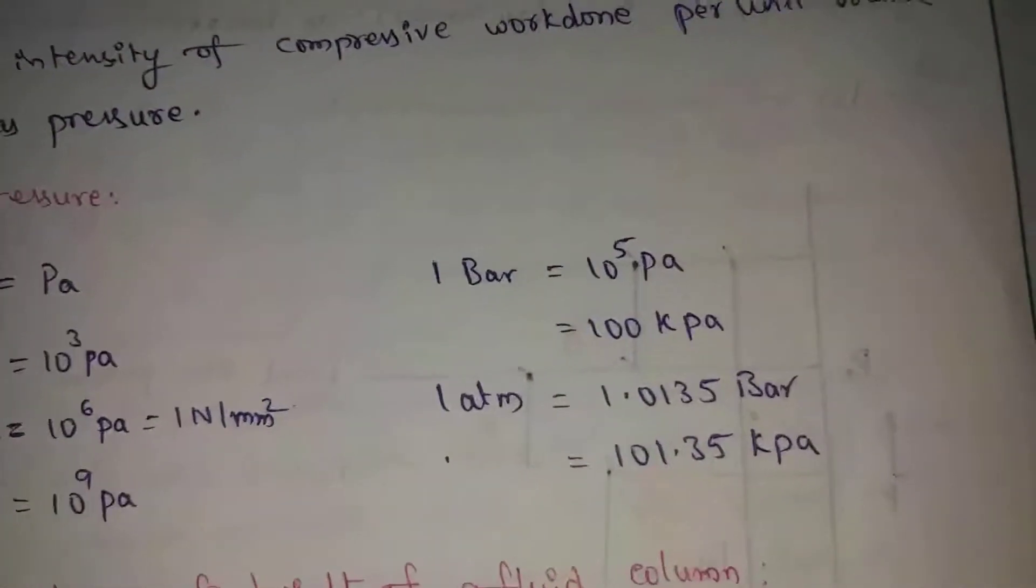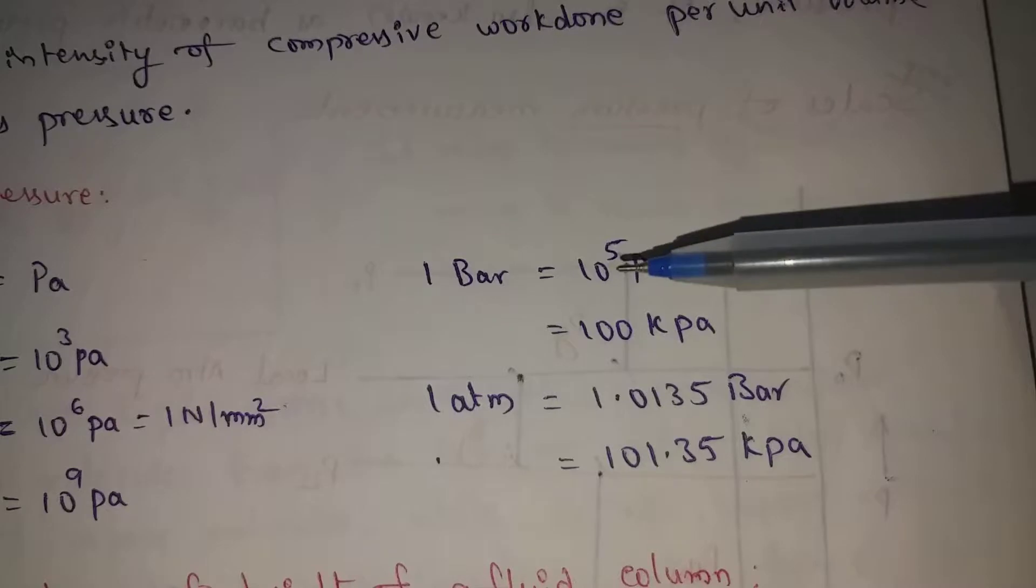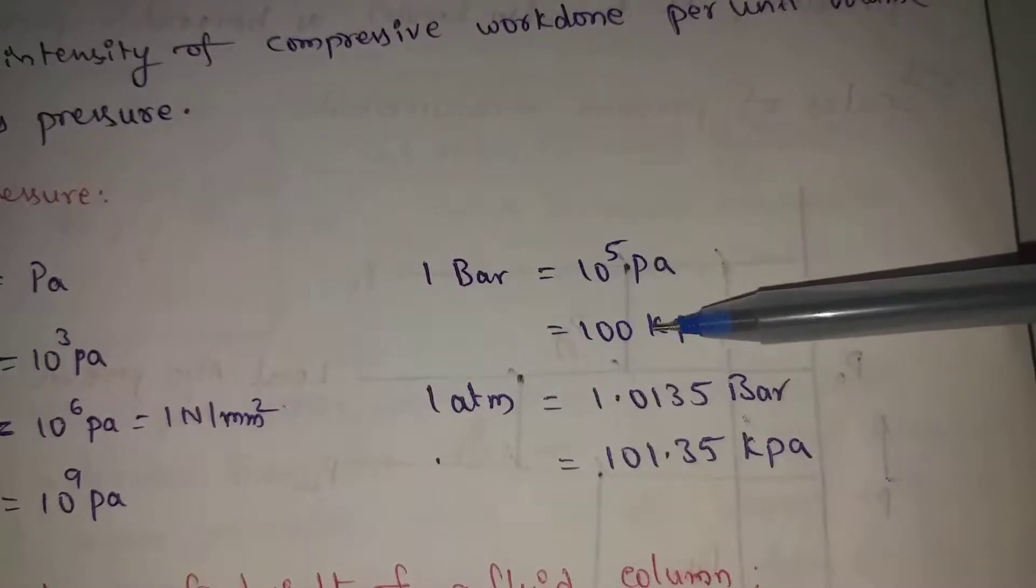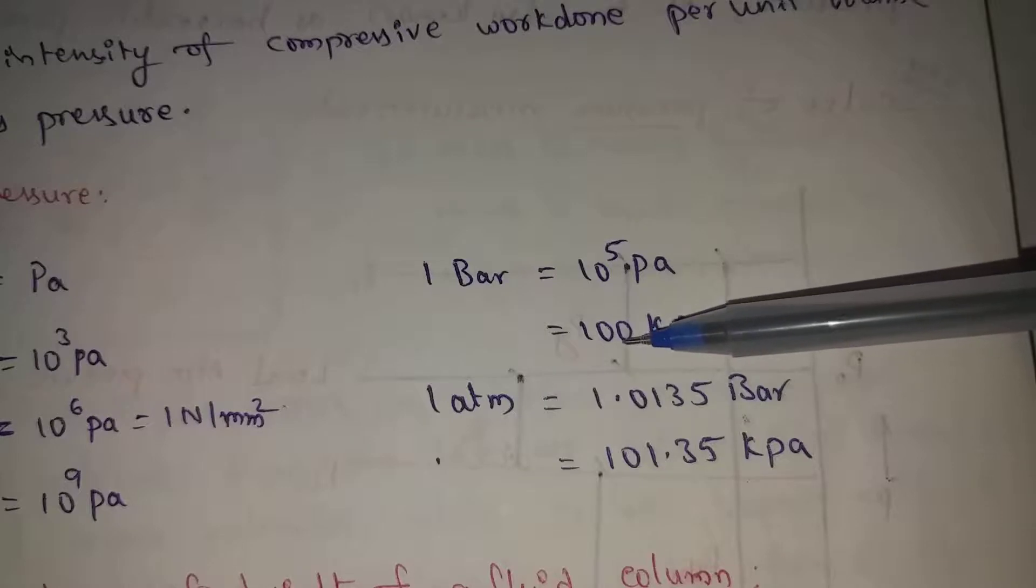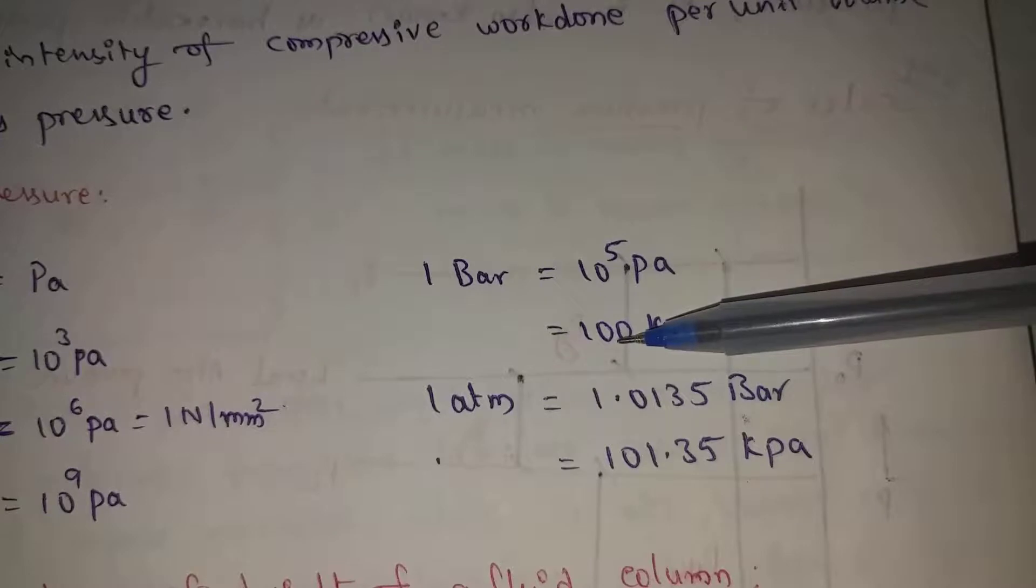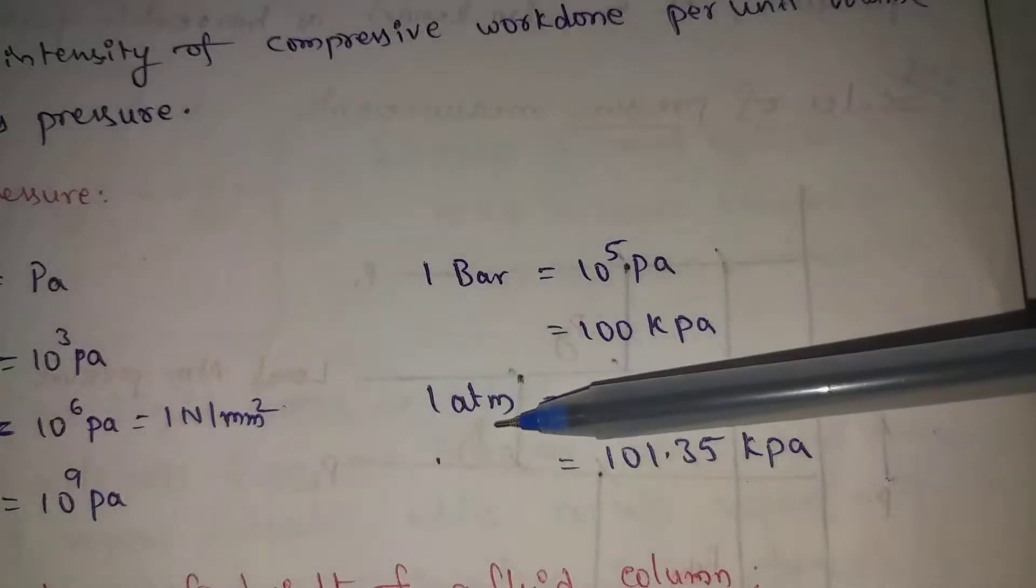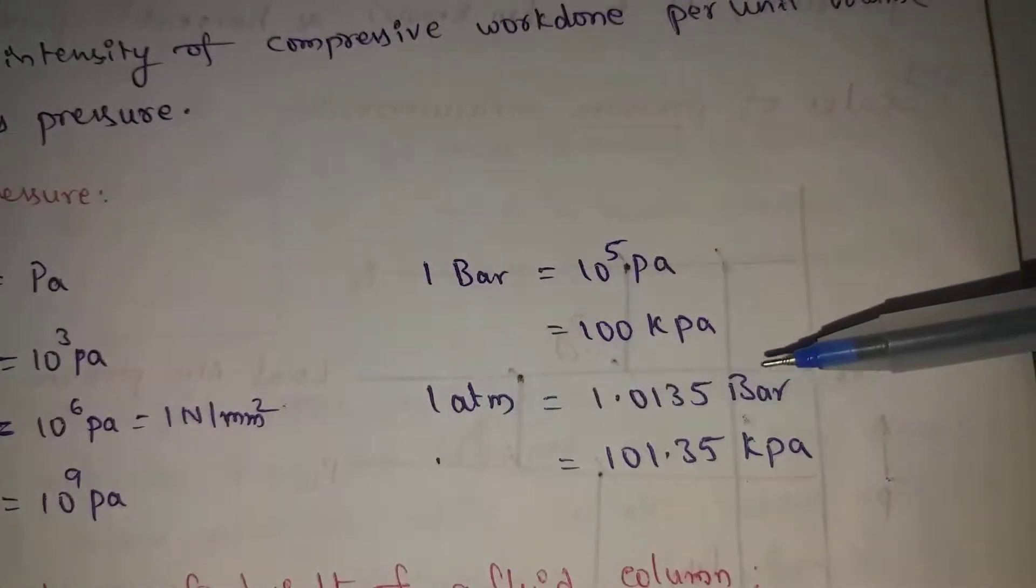Next, bar is 10 power 5 Pascal. Here we are going to change to 100 kilopascal. Here we have 10 cube, 10 cube here is 3 and here is 2 zeros, so 10 power 5. Now simple: here convert 100 kilopascal.